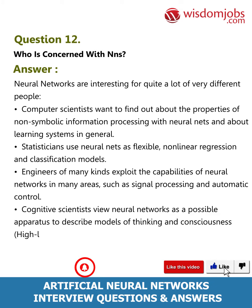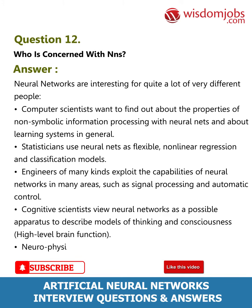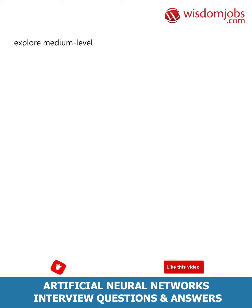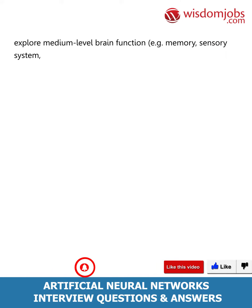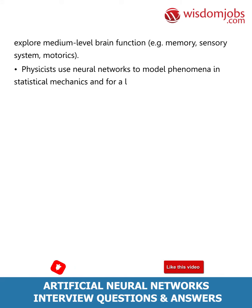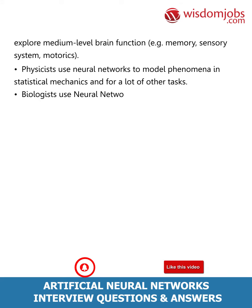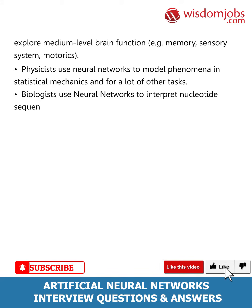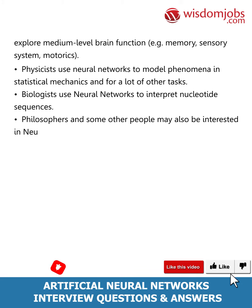Cognitive scientists view neural networks as a possible apparatus to describe models of thinking and consciousness — high-level brain function. Neuro-physiologists use neural networks to describe and explore medium-level brain function, such as memory, sensory systems, and motorics. Physicists use neural networks to model phenomena in statistical mechanics and for other tasks. Biologists use neural networks to interpret nucleotide sequences. Philosophers and others may also be interested for various reasons.